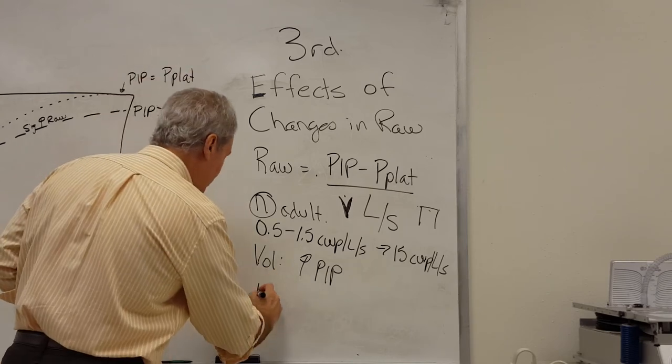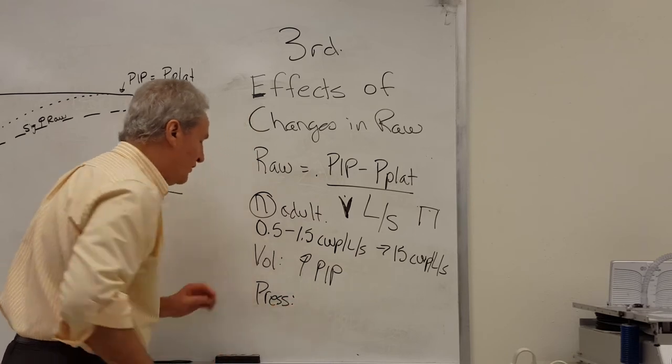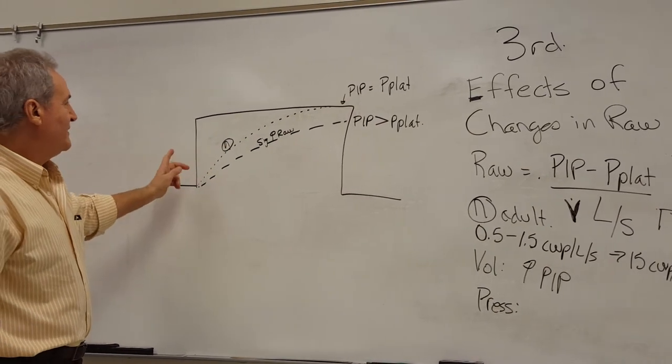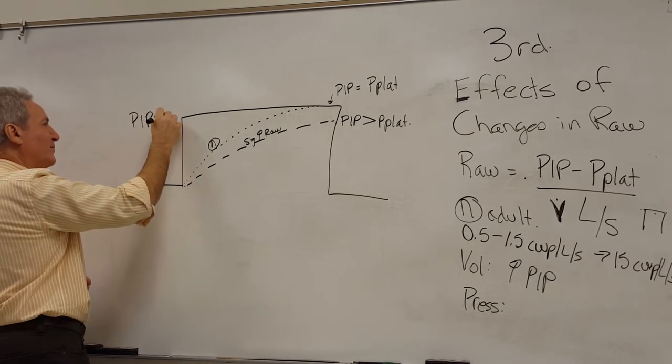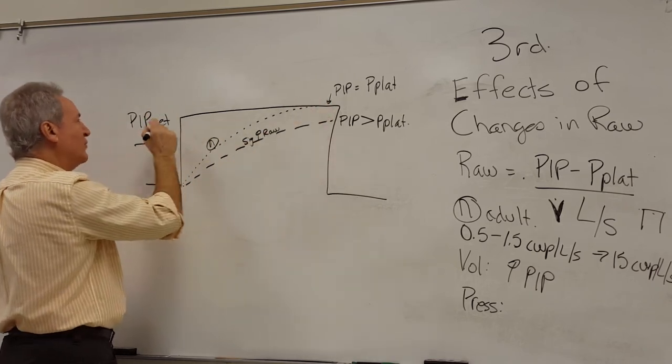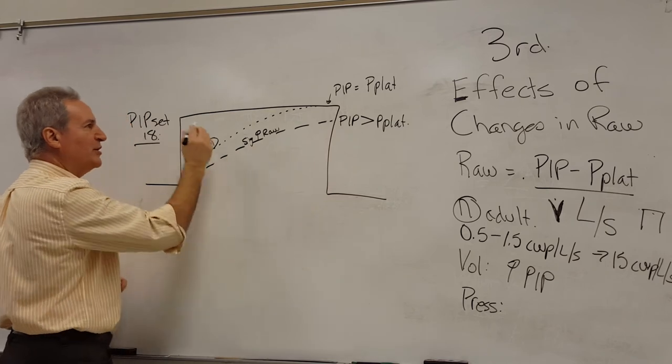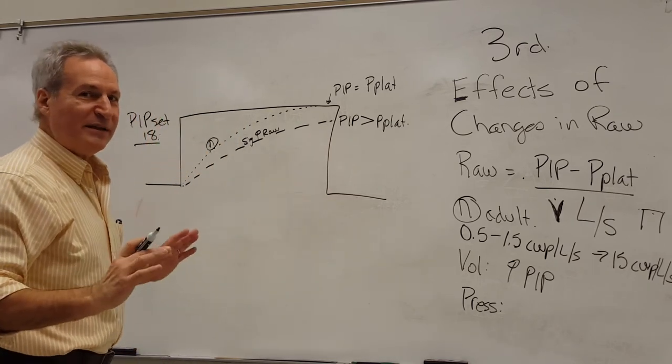What happens if we're in pressure ventilation? Let's move over here for a second. When we look over here, we can see we've got our PIP set at 18. Notice it's a square waveform. We've set our PIP from the beginning of inspiration to the end of inspiration. The pressure is constant.